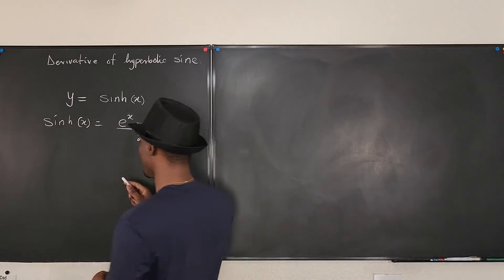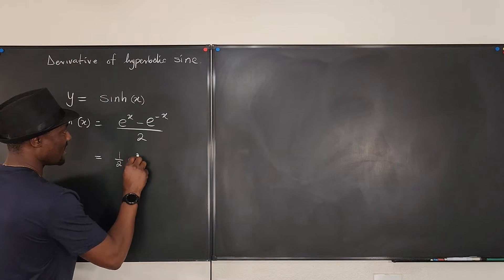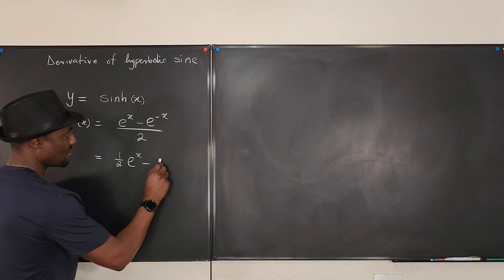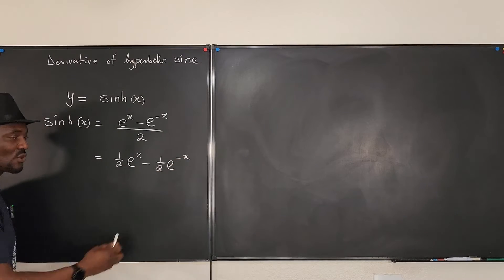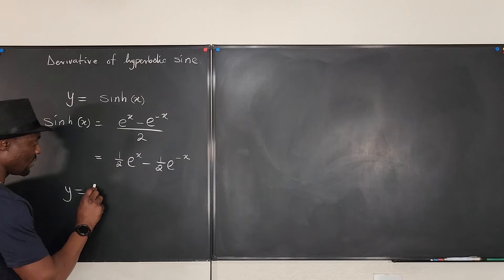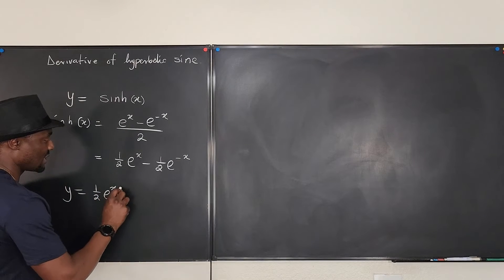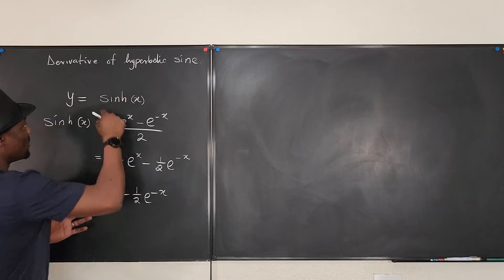minus one half of e to the negative x. This makes your differentiation easy. We can say y equals half e to the x minus half e to the negative x. This is what we need to differentiate, and the good thing about this—that's why e is an amazing function—